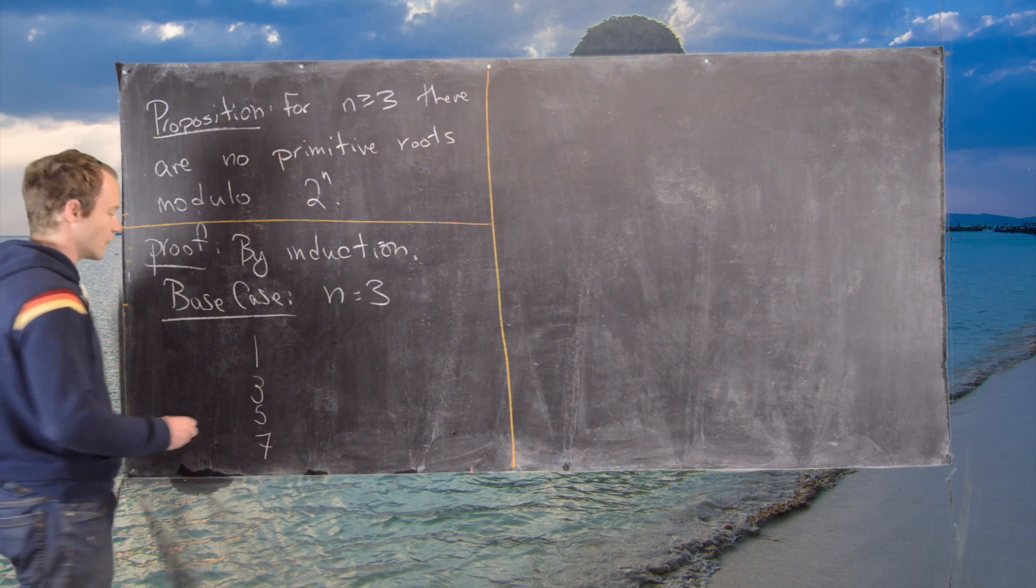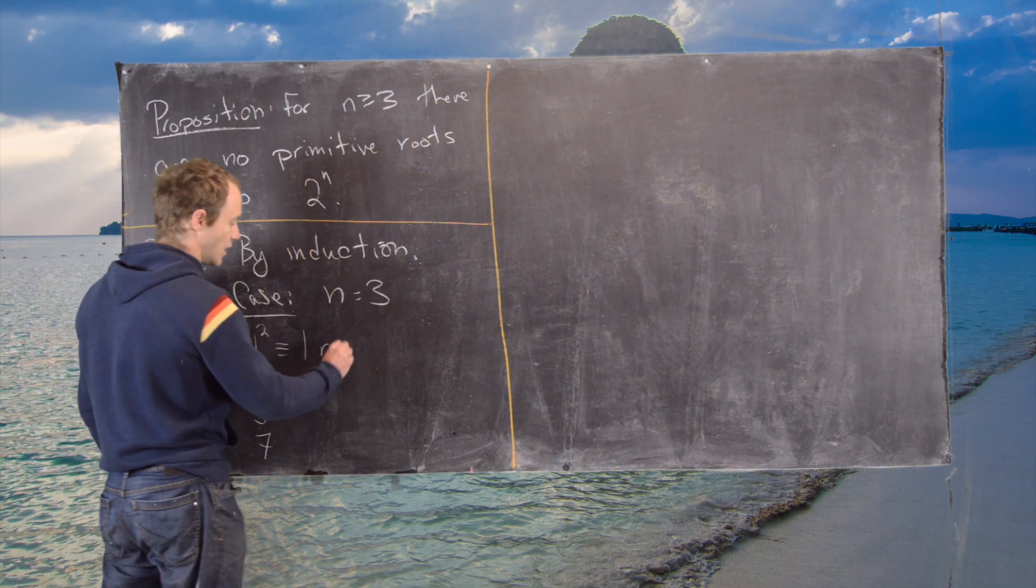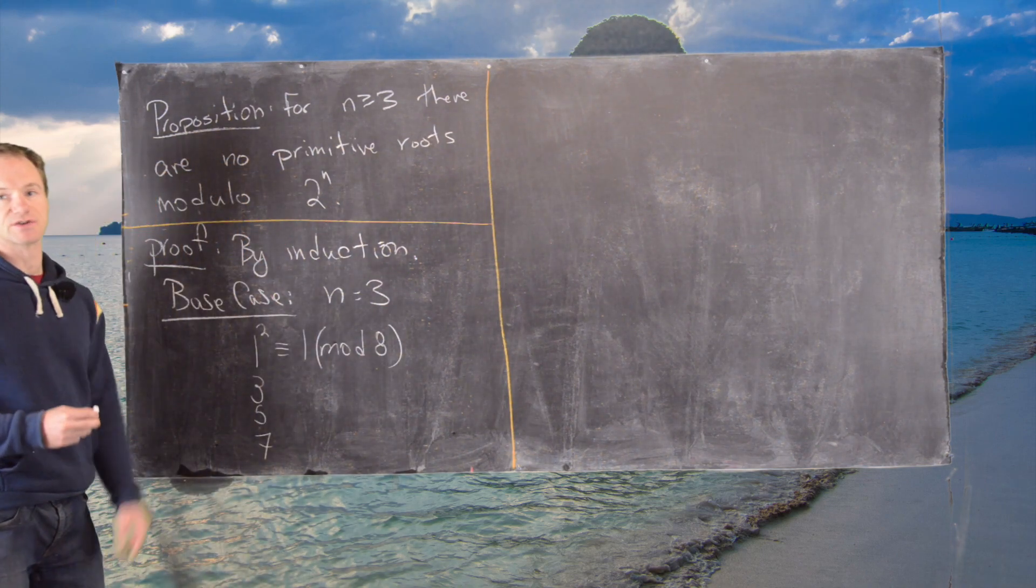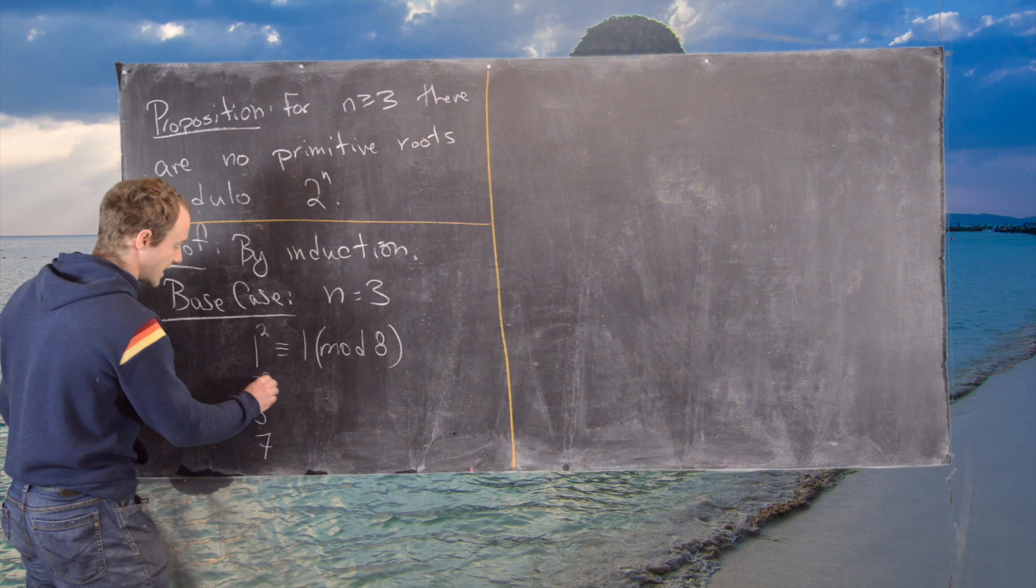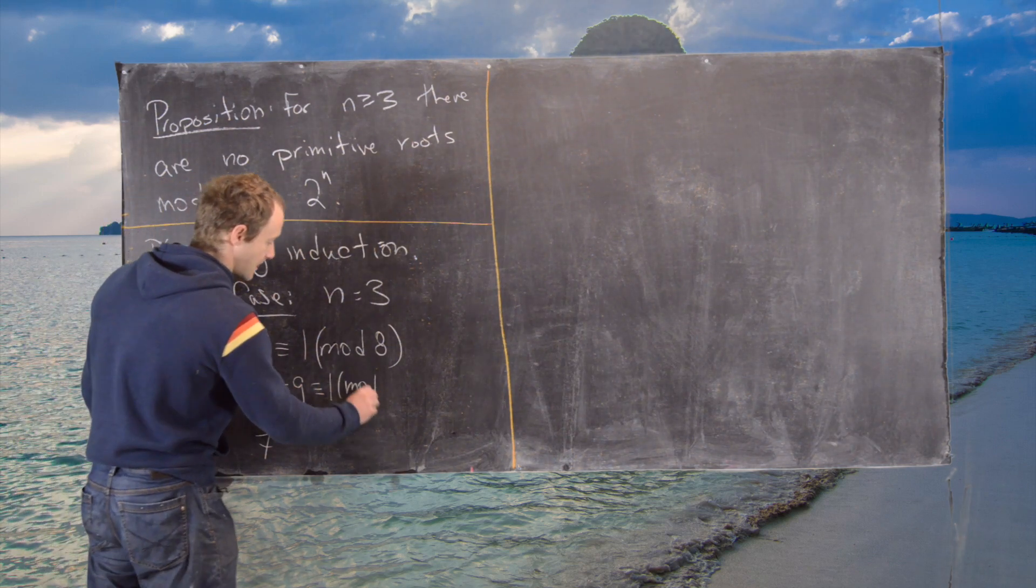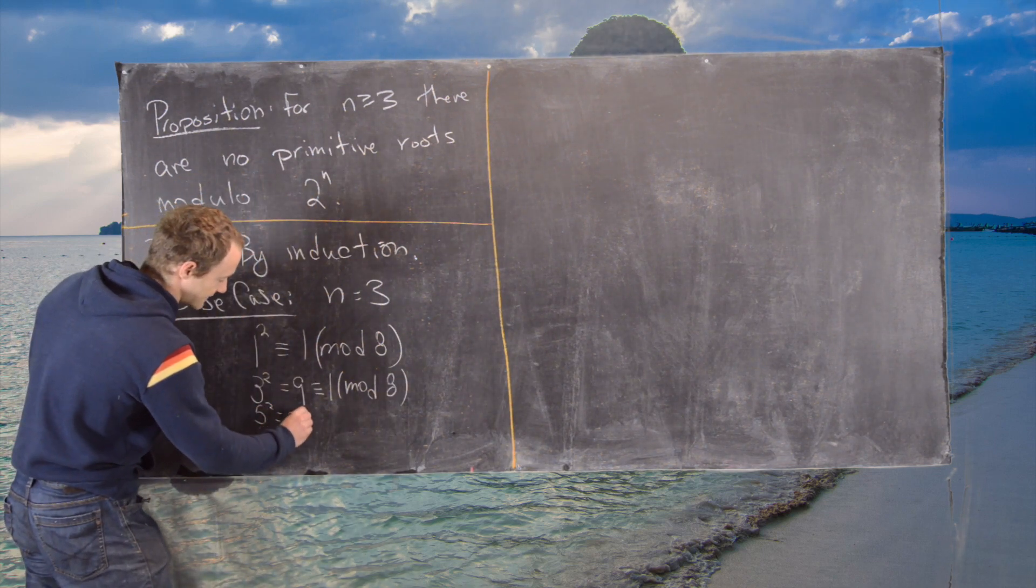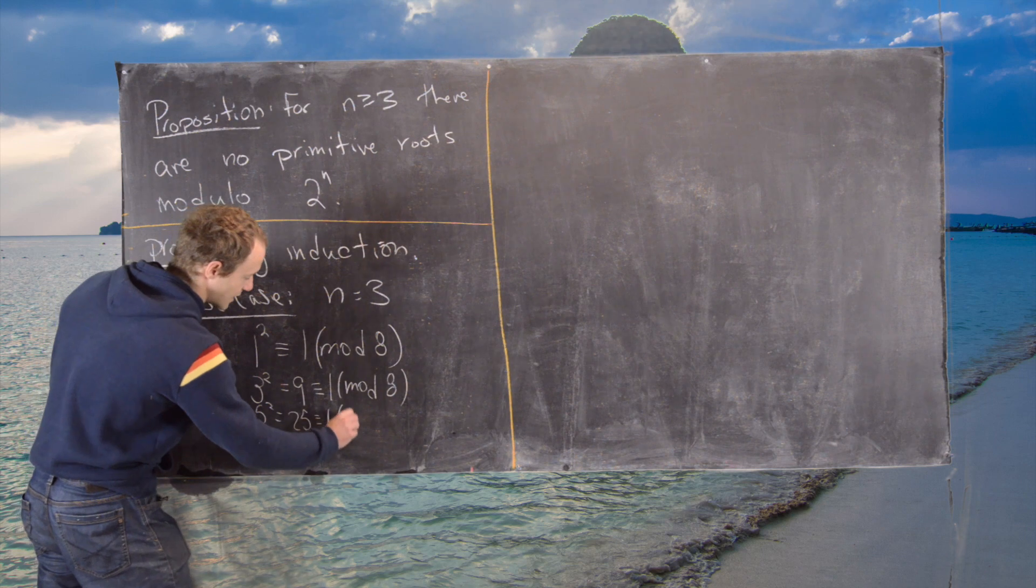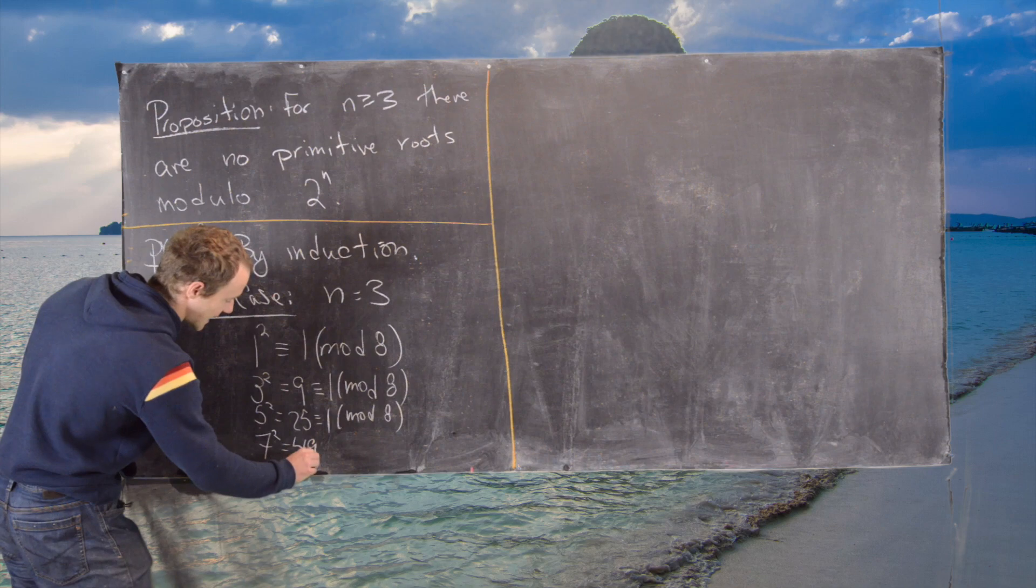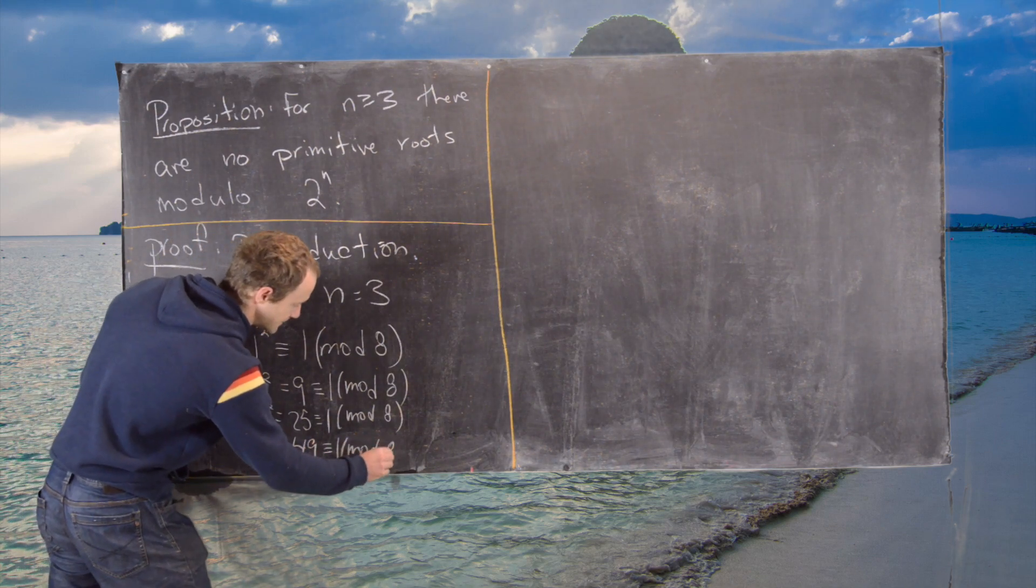And we'll do that by showing that they all have order 2 or less. So 1 squared is obviously congruent to 1 mod 8. So that actually has order 1. 3 squared is equal to 9, which is congruent to 1 mod 8. 5 squared is equal to 25, which is also congruent to 1 mod 8. And finally, 7 squared is equal to 49, which is also congruent to 1 mod 8.